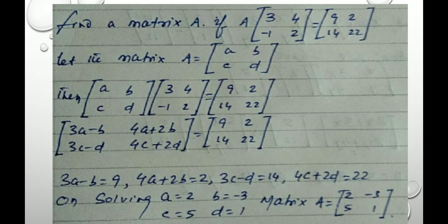On solving the equations simultaneously, solving the first two equations for the values of A and B, and to find out the values of C and D, second two equations are solved simultaneously. Finally on solving, we get A is equal to 2, B equal to minus 3, C equal to 5, and D equal to 1. Therefore, the matrix A is equal to 2, minus 3, 5, 1.